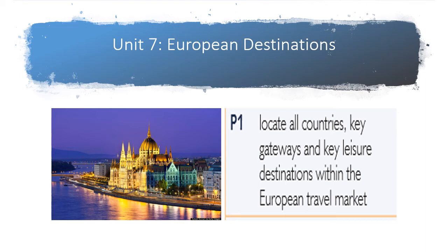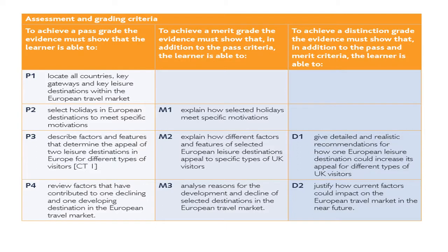Hello, this presentation is to help you with Unit 7 European Destinations. This PowerPoint presentation is a guide to completing P1: locating all countries within Europe, key gateways which means key airports, Eurostar terminals and ports, and key leisure destinations within the European travel market in each country. So it is P1 that we're looking to complete — that's the assignment P1.